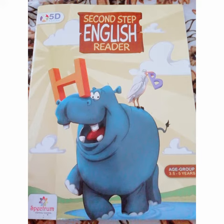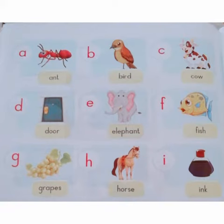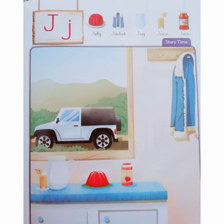I am going to teach you English book reading. Previous reading was A to I, so let's start the new letters. The new letter is J.